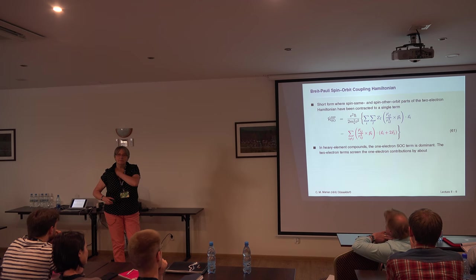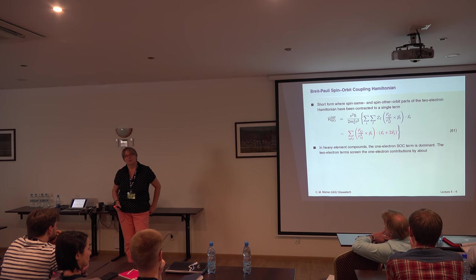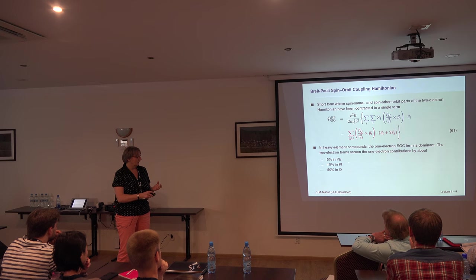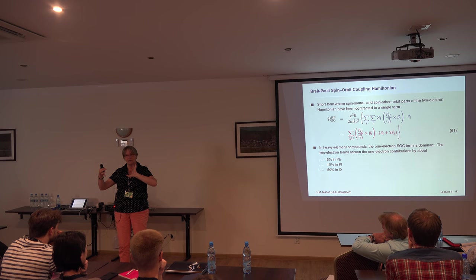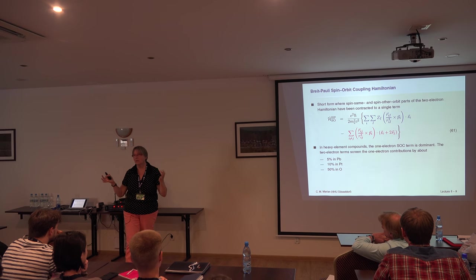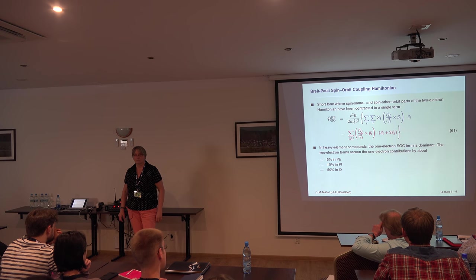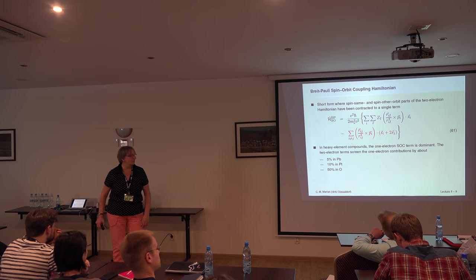In heavy elements, the one-electron term is dominant — about 90% of all spin-orbit coupling comes from this term. But if you go to organic compounds with carbon, oxygen, nitrogen, the two-electron terms contribute approximately 50% to the spin-orbit coupling — they screen the interaction, similar to screening of Coulomb interaction. When this is 50%, you cannot neglect it. You might neglect it at 10% for platinum, but 50% cannot be neglected.